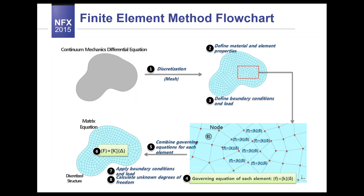If you take a look at the next slide, we are looking at the finite element method flowchart. Basically, we have some initial geometry to discretize. We can use the geometry, or we can skip this step and build our model directly from the mesh. Generally speaking, this mesh is the assembly of local equations — local matrix form equations which describe the governing law.